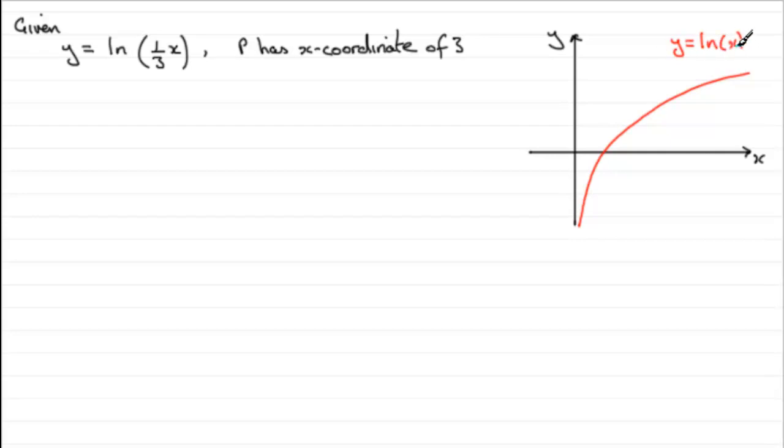But one-third x? Well if I replace my x with one-third x, it's going to cause this graph to be stretched out by a factor of 3 parallel to the x-axis. So we're looking at something like this then. Graph coming through here, going out like this. So this would be the graph of y equals the natural log of one-third x.